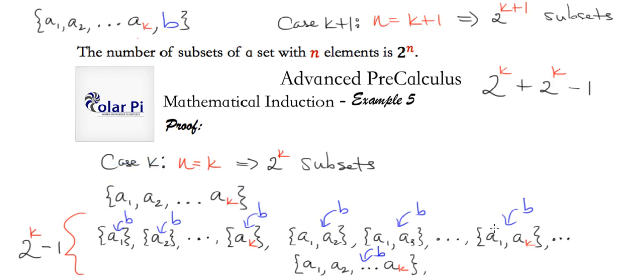But wait, there is one unique new subset of this that you can't create just by throwing a b into one of the subsets of this guy. And that new one is a set containing just b. So we add a 1 here.